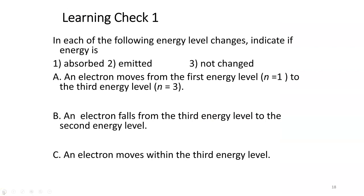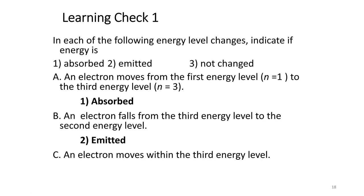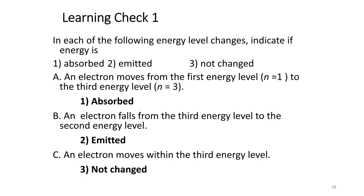Let's try some questions. For each energy level change, indicate if energy is absorbed, emitted, or not changed. An electron moves from the first shell to the third shell — it's going up, so it's absorbing energy. An electron falls from the third to the second shell — it's coming down, so energy is emitted. An electron moves within the third energy level — that's nothing, it's not changing levels, so there's no change in energy.